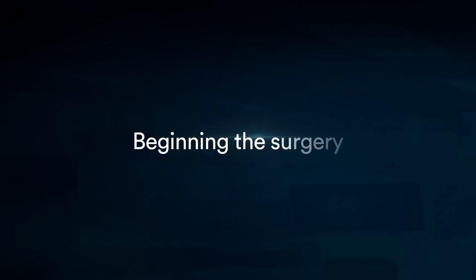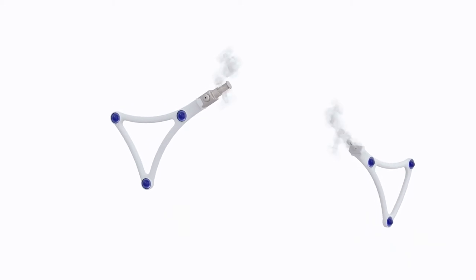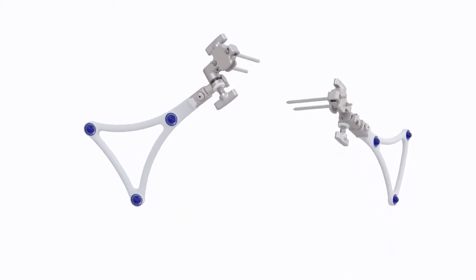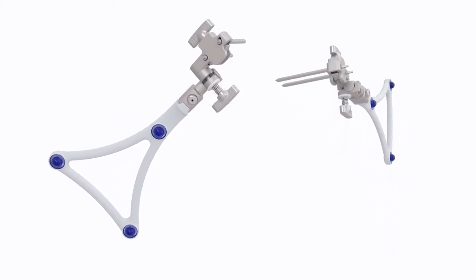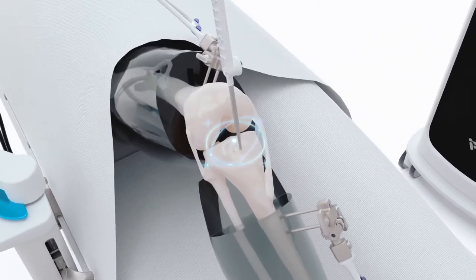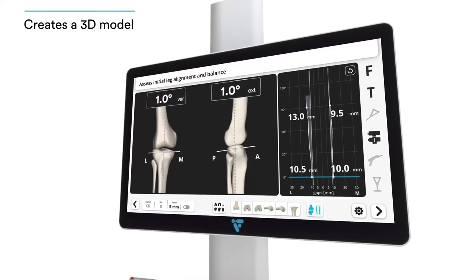Your surgeon will start the procedure by making an incision in your knee. Next, they attach trackers to your knee which work with the camera to gain the information needed to perform your procedure. From this information, the surgeon creates a 3D model of your knee.